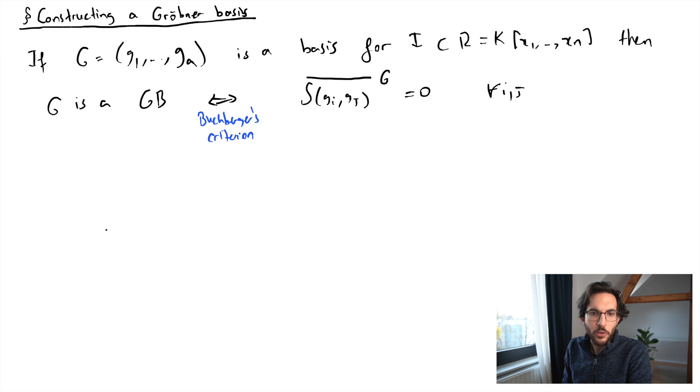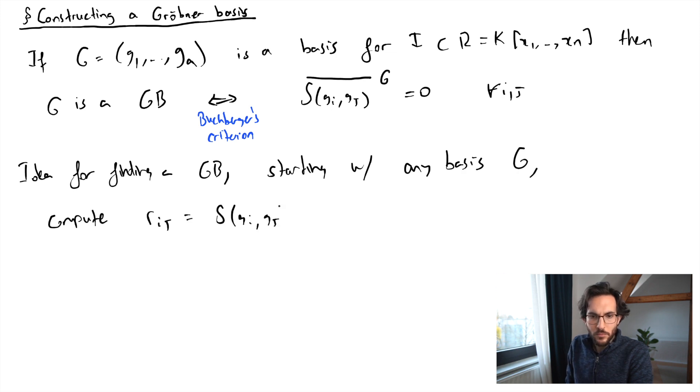This suggests how we could start with some basis, maybe not a Gröbner basis, and then complete it to a Gröbner basis by simply adding these remainders if they're not zero. So if we start with some basis G for an ideal, we compute all the remainders upon polynomial division for the s-polynomials S(gi, gj) and then add all the nonzero terms to our basis.